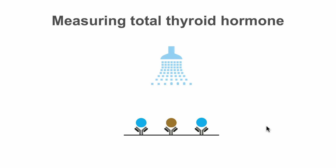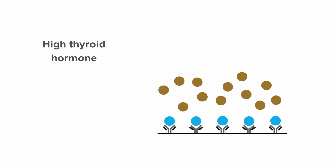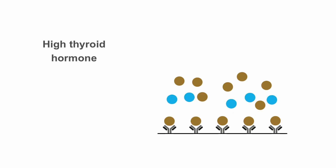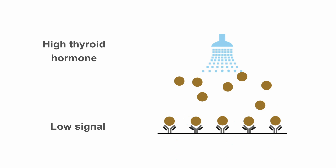Let's look at a few examples of how this works for our patients. If we have a patient with high thyroid hormone levels, this thyroid hormone is going to displace most of the bound analog, which is then going to be rinsed away, leaving a very low signal.